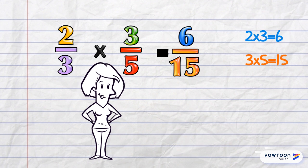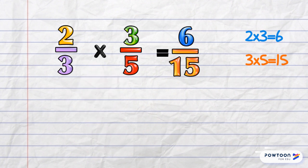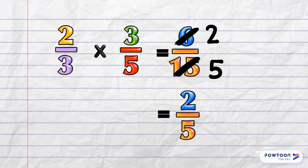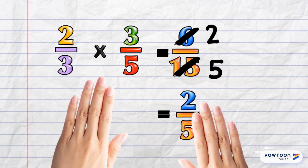We have to reduce if possible. And 6 and 15 are both in the 3 times table—they're divisible by 3. 6 divided by 3 is 2, and 15 divided by 3 is 5. Our final answer is 2 over 5, or 2 fifths.